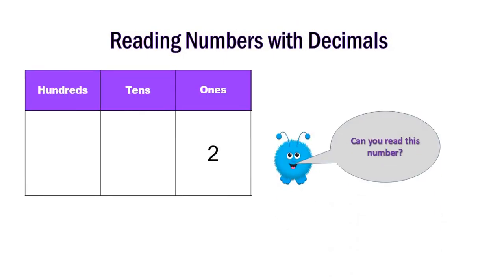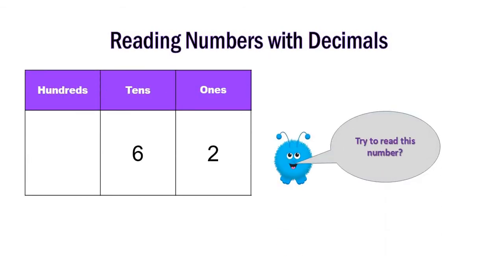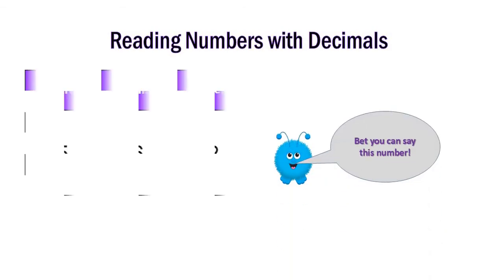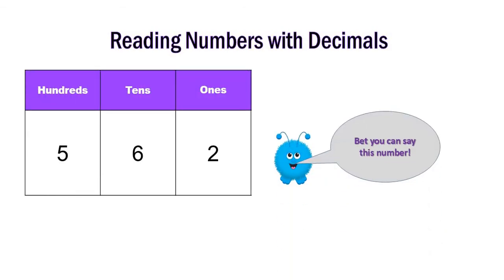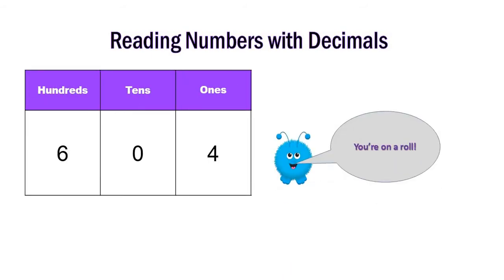This is too easy — it's just a one-digit number. Yes, too easy! What about this one? Okay, 62. What about this one? Three digits — okay, this is 562.